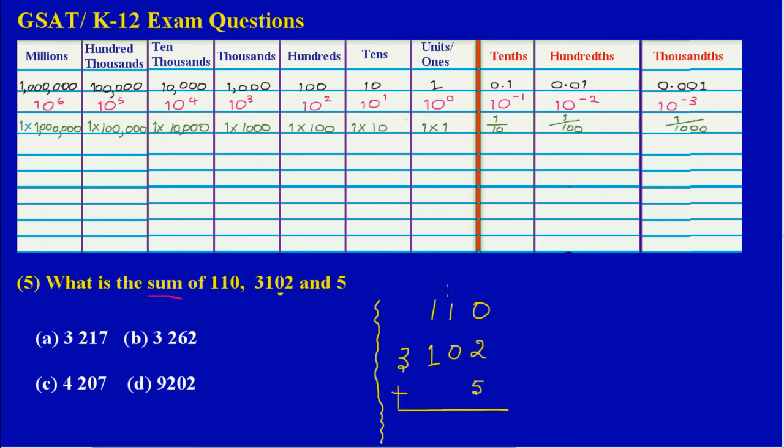Remember, it's addition, so we can look at how it relates to the place value chart that we have up here. I would have 110, then 3102, then 5, and if you notice they fall in the same columns.